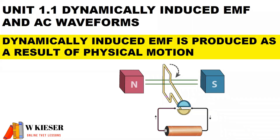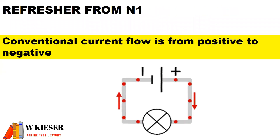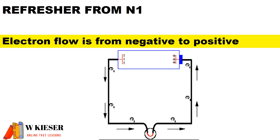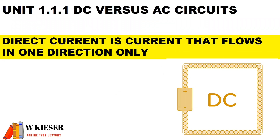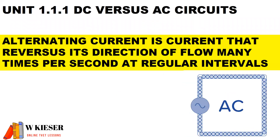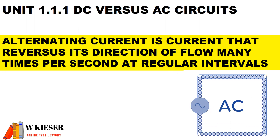Dynamically induced EMF is produced as a result of physical motion. As background from N1: conventional current flows from positive to negative; electron flow is from negative to positive; direct current flows in one direction only; and alternating current is current that reverses direction of flow many times per second, at regular intervals.